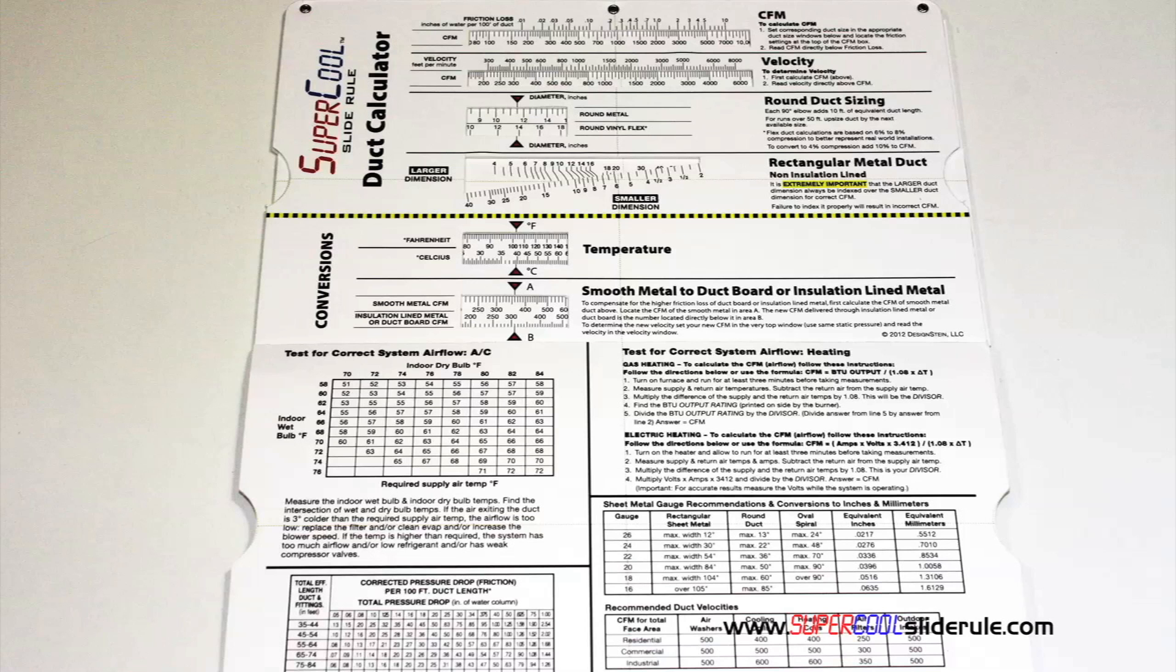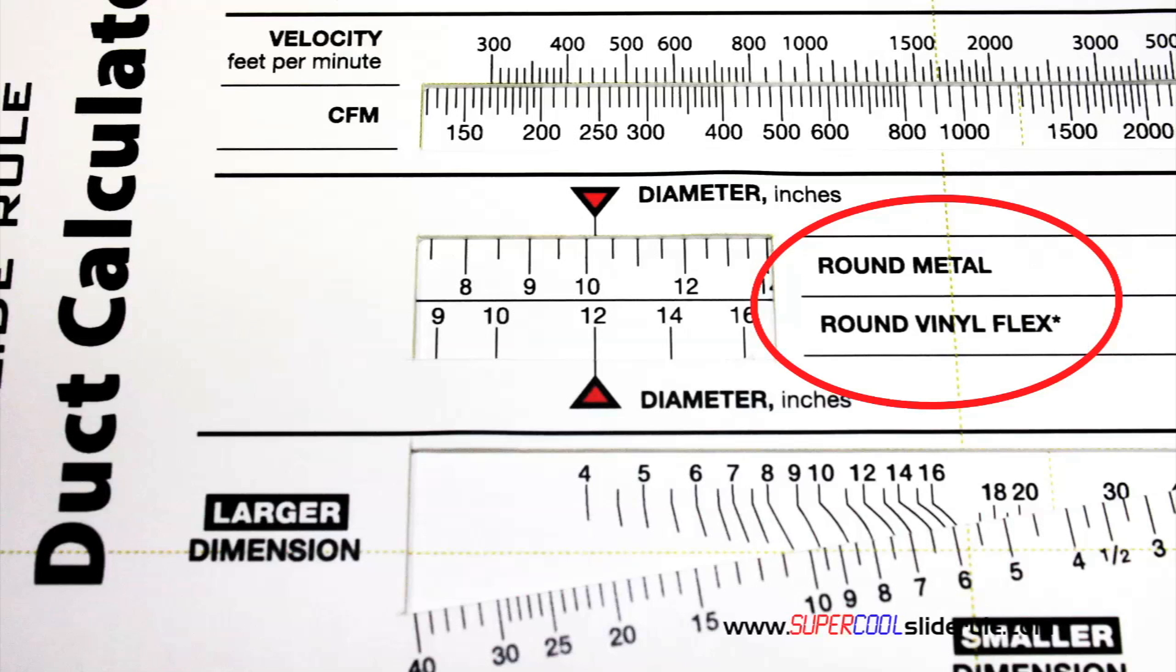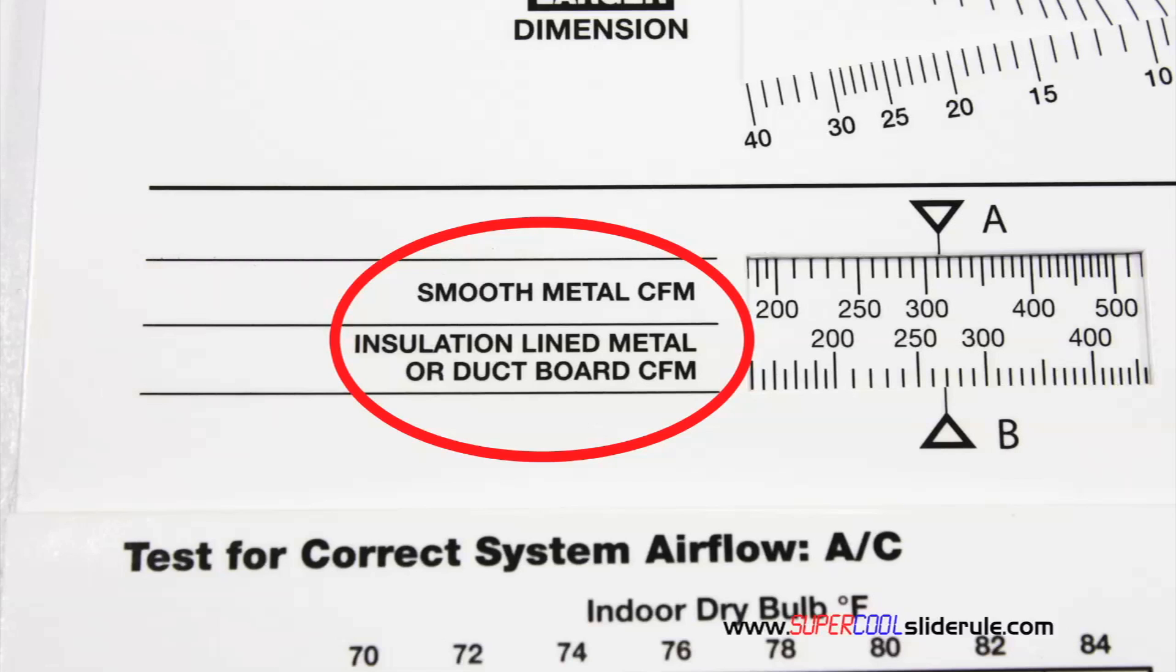Inside is packed with even more information. It performs sizing of both metal and flexible duct. It has the only direct reading conversion from smooth metal to insulation lined metal we've ever seen.